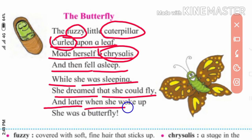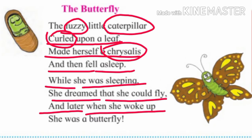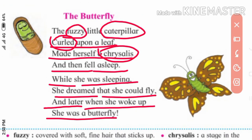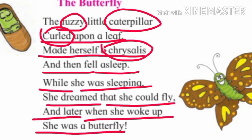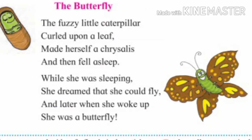'And later when she woke up, she was a butterfly.' When she woke up from her deep sleep, she had become a butterfly. She went into the adult stage — a very beautiful butterfly. Coming out of the chrysalis, the butterfly now has six long legs. The changes of the stages of butterfly are also called metamorphosis.